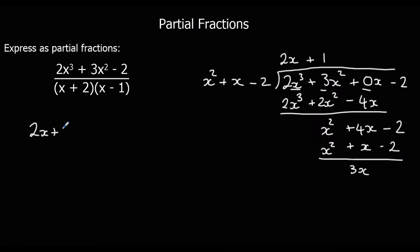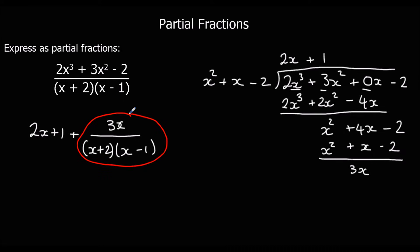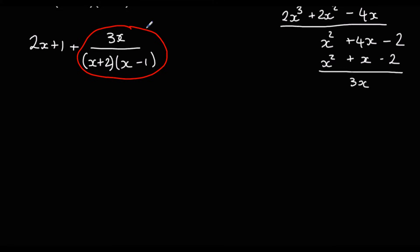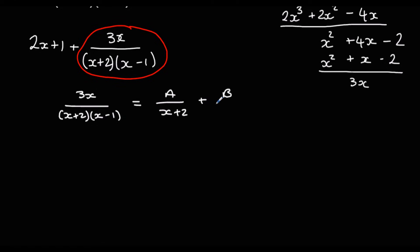That means we've got 2x plus 1 on the outside, plus 3x as the remainder over the original denominator. We can ignore the 2x plus 1 for now and split the fraction part into partial fractions. So 3x over (x + 2)(x − 1) equals A over (x + 2) plus B over (x − 1).